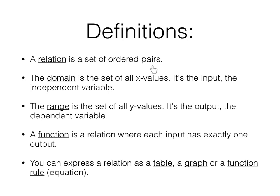A relation is a set of ordered pairs — any set of ordered pairs, given as a table, list, or otherwise. The domain is the set of all x values — the input, also called the independent variable. The range is the set of all y values — the output, or dependent variable. You put in the x and out comes the y.